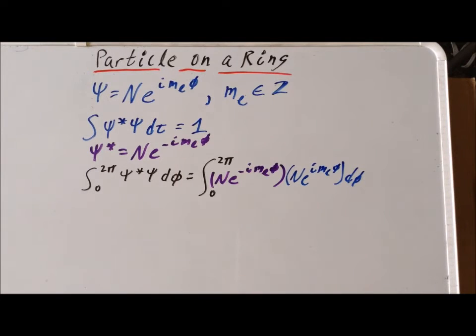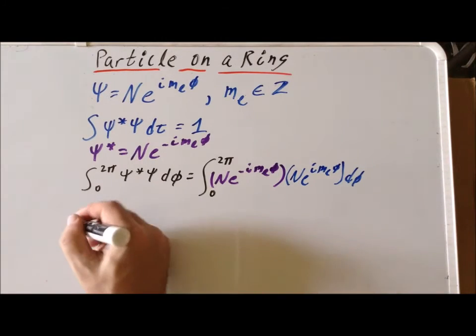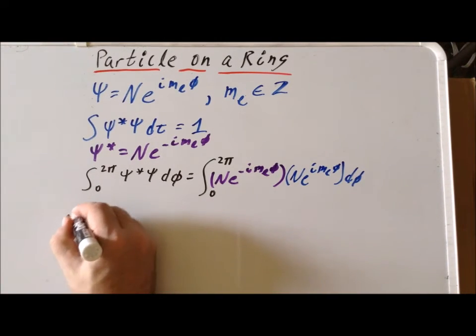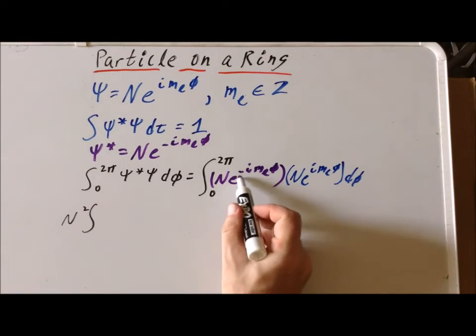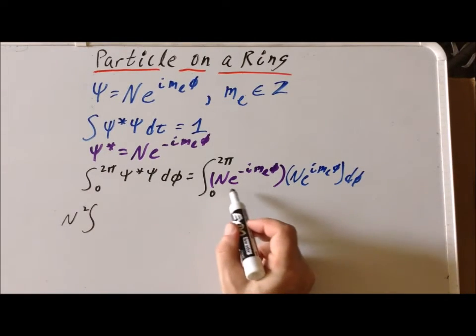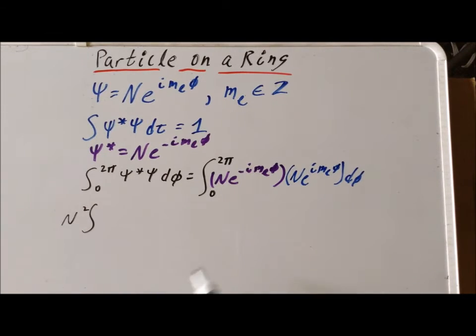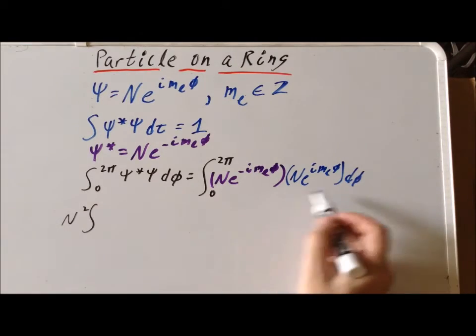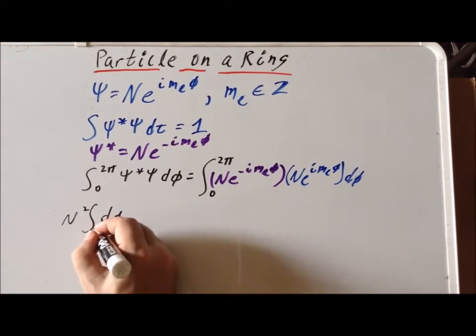We can simplify the expression by noticing that we have n times n is n squared. We can always pull that through the integral operator because the integral is a linear operator. And then we have e to the minus i m sub l phi times e to the positive i m sub l phi. That gives us e to the 0 power, which is exactly 1. So those parts drop out and we're left with simply d phi between the limits of 0 and 2 pi.